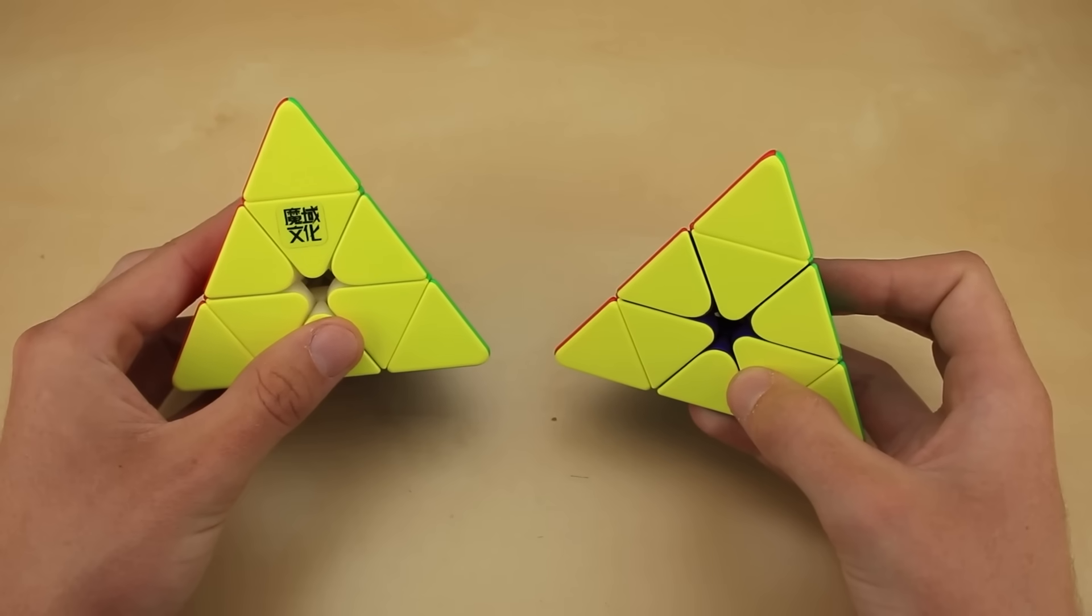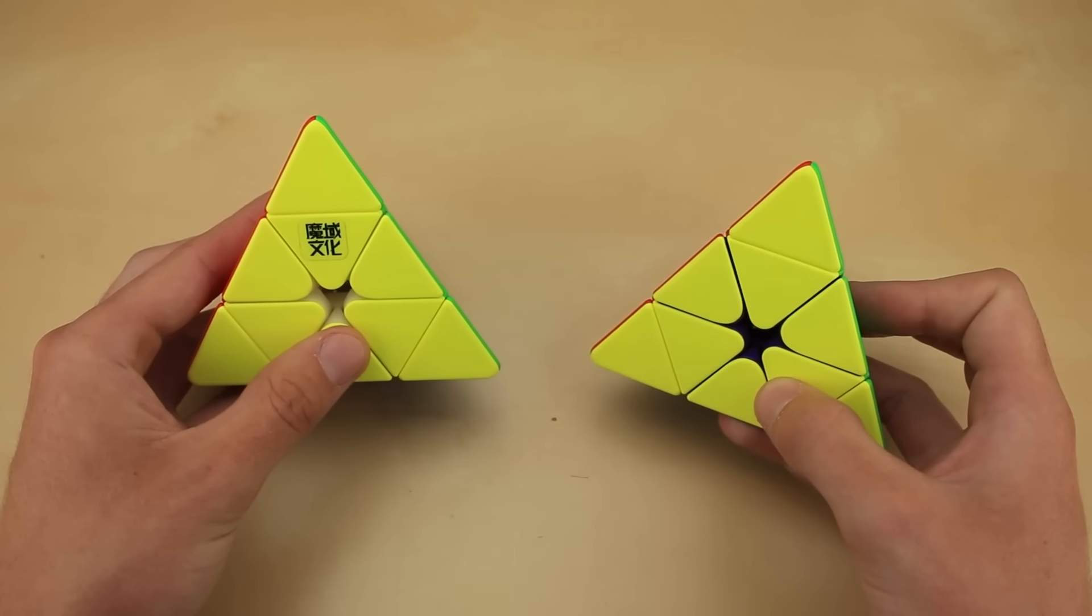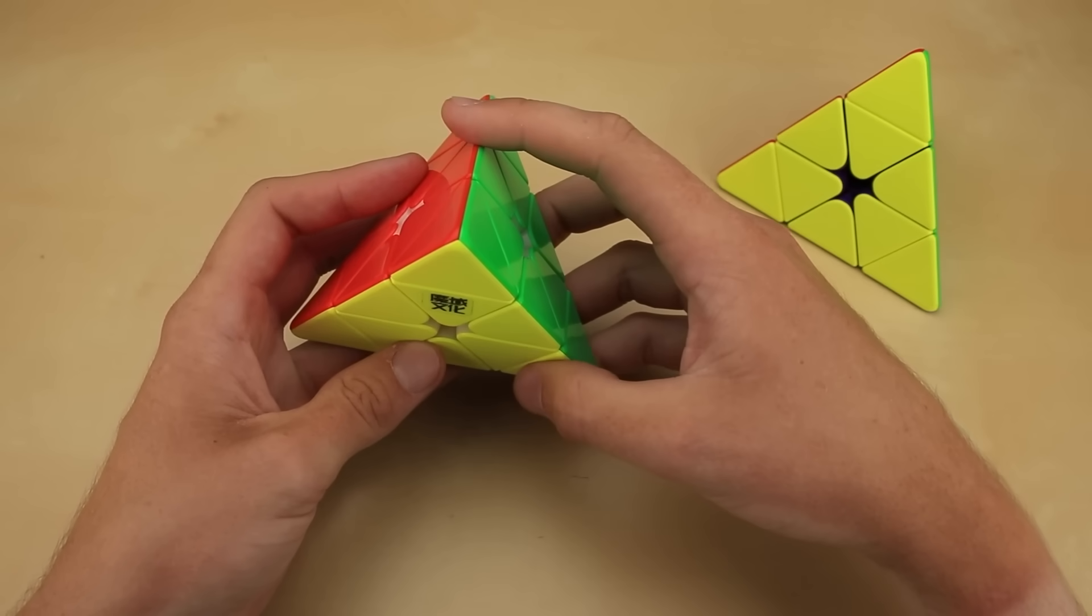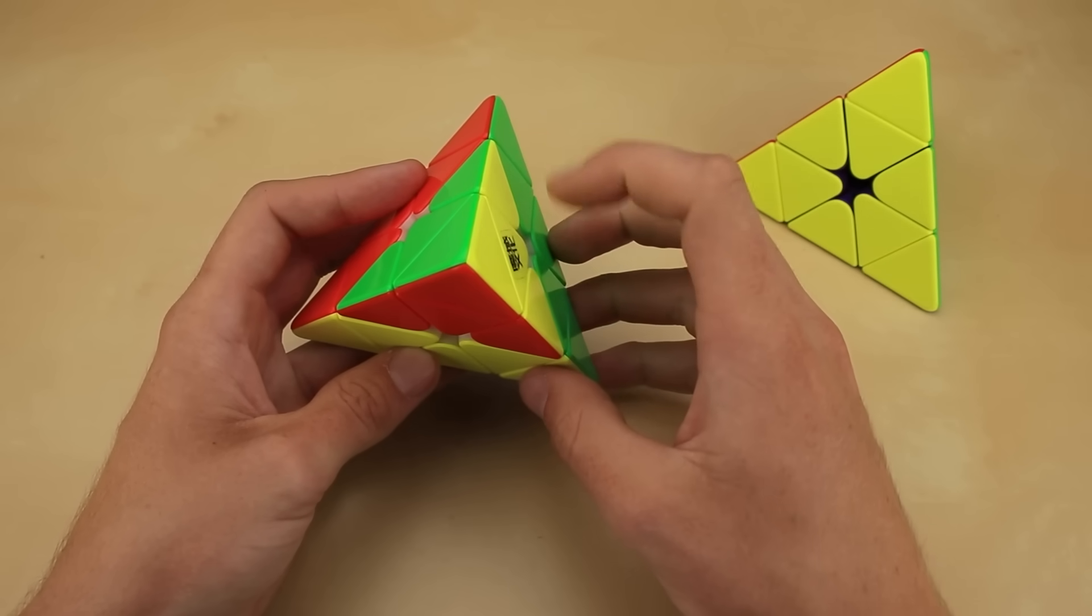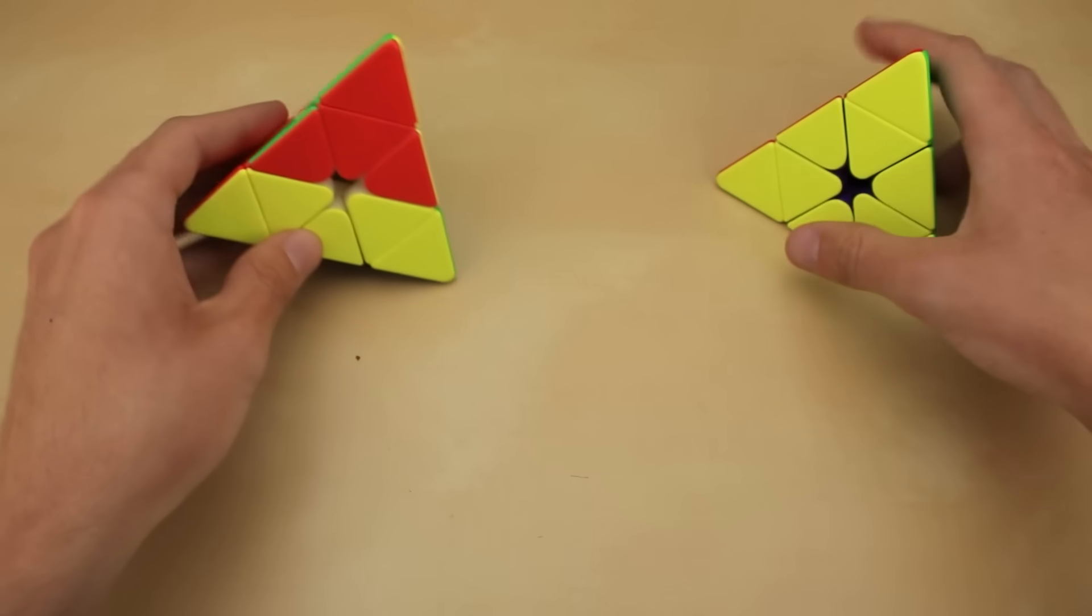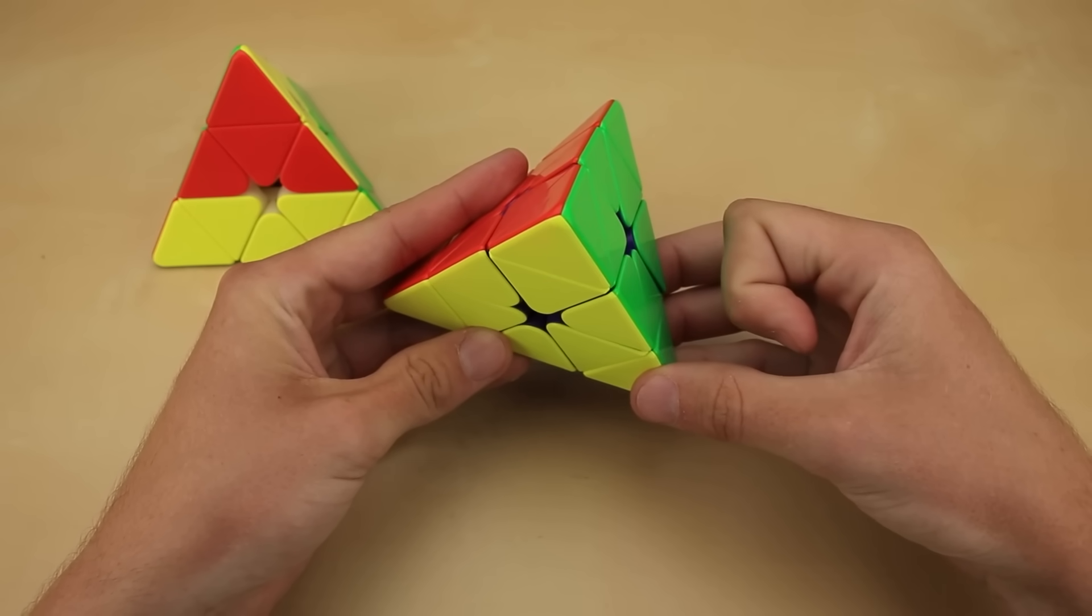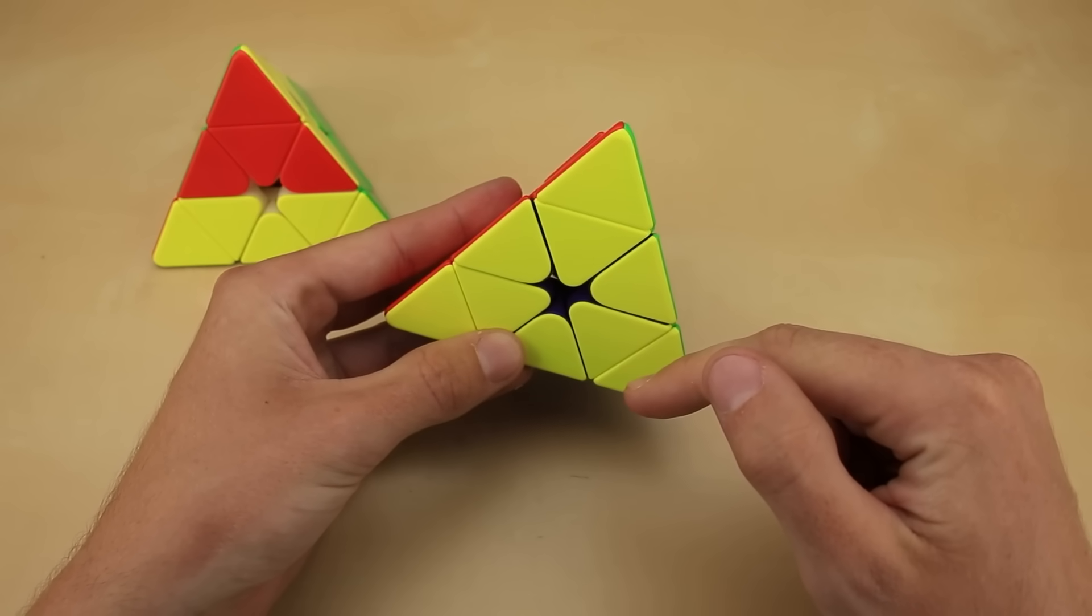Let me answer that by showing you two identical puzzles, the new Moyu Weilong Pyraminx. The only difference is that this one has Maglev, and this one does not. I'm going to start by doing a single hard flick on each of them. As you can see, the non-Maglev version easily does about a turn and a half. Sometimes you can get it to do up to two turns. Compare that to the Maglev version, where a single hard flick will very easily get you two turns, and a lot of times, you can get a full three turns, as you just saw there.